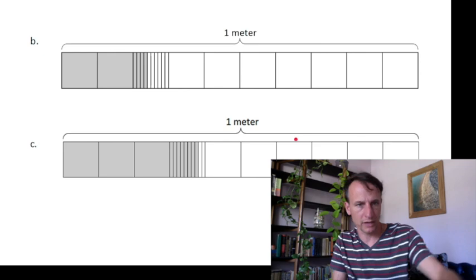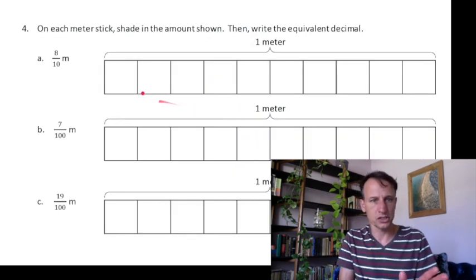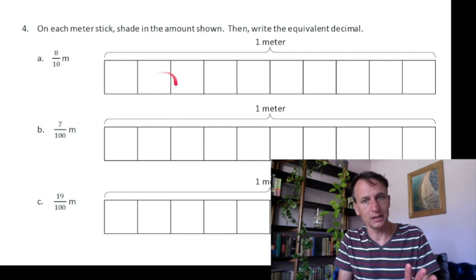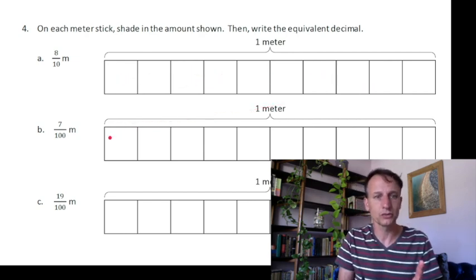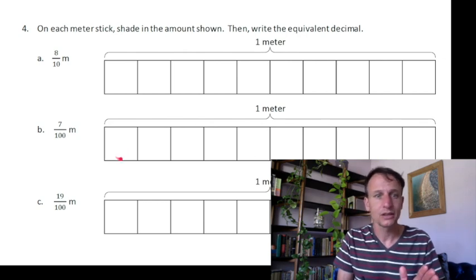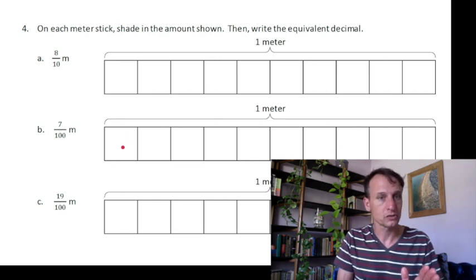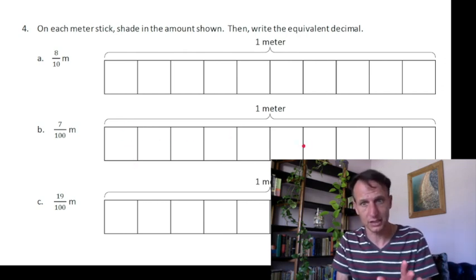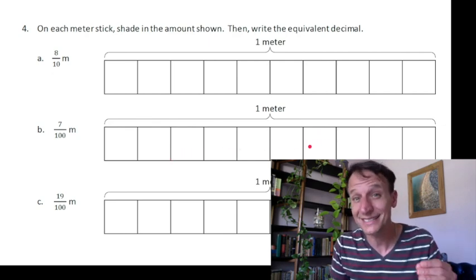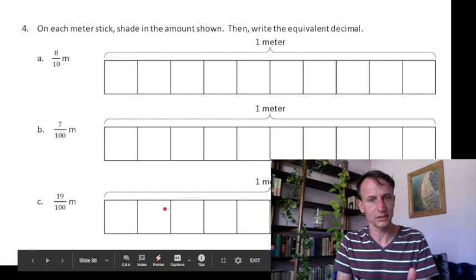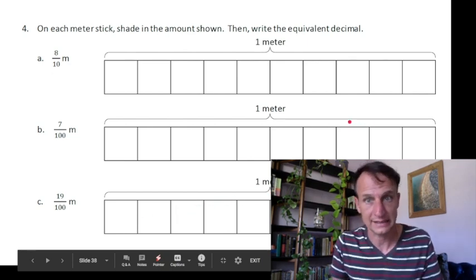More of the same here. On this one you're going to shade in, first eight-tenths, seven-hundredths, nineteen-hundredths. So eight-tenths is going to obviously be eight of these boxes, right? Because there are ten of them. When you do seven-hundredths, will you use even one box? No, because this is ten-hundredths. This is a dime or ten pennies, it's one-tenth, it's ten-hundredths. So seven-hundredths is not even going to be one box. So you will not go out seven of these boxes, that would be seven-tenths, and this is seven-hundredths. Same thing here with nineteen-hundredths. There's ten, and then nine out of ten of this box.